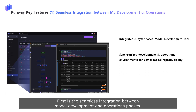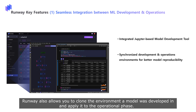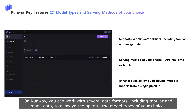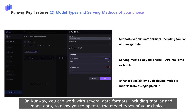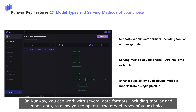First is the seamless integration between model development and operations phases. With an integrated JupyterLab extension that allows you to create machine learning pipelines, you can easily develop your own models and deploy them on the same platform. Runway also allows you to clone the environment a model was developed in and apply it to the operational phase, ensuring that models can be reproduced easily and put into production with less effort and in less time. On Runway, you can work with several data formats including tabular and image data to allow you to operate the model types of your choice.